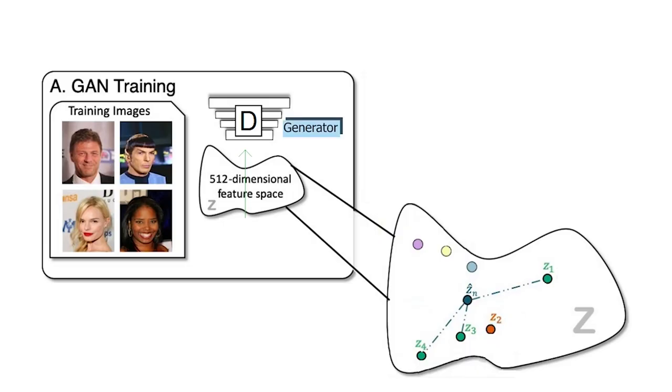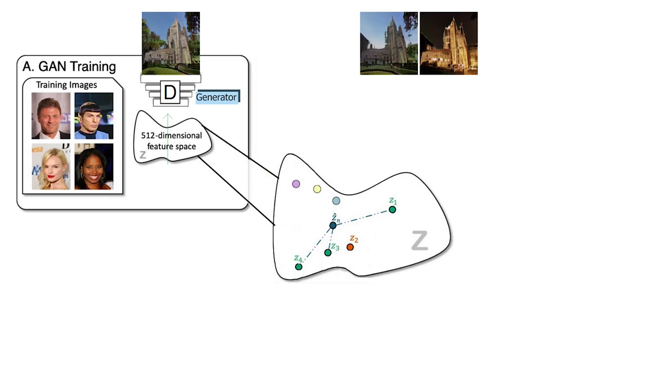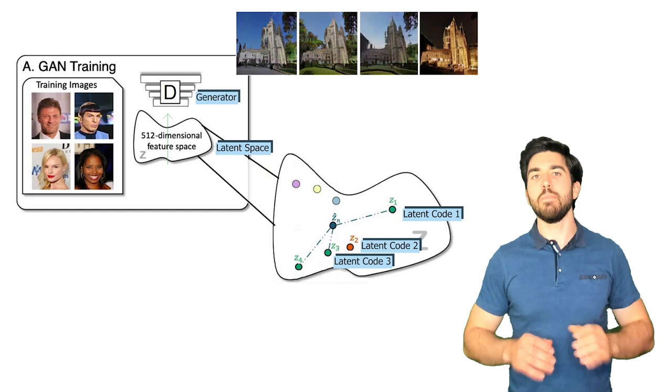This new paper by Pan et al. allows you to edit images directly. Here they used a GAN, which is a known AI architecture that takes images as inputs to generate new images. As we will see, it can also generate images from nothing, noise, or specific points.